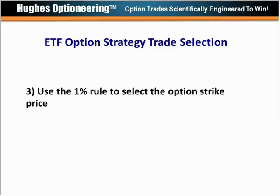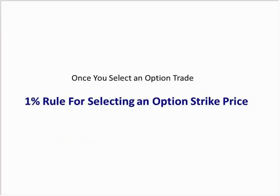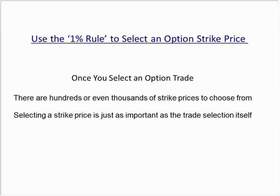The third step in ETF option trade selection is to use the 1% rule to select the option strike price. When you buy an option, depending on the ETF, there could be hundreds or even thousands of strike prices to choose from. Selecting the strike price can be just as important as the trade selection itself.